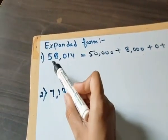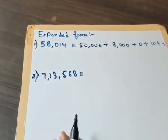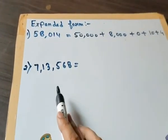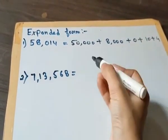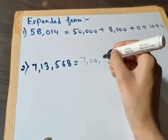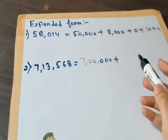That equals to 58,014. Now coming to the next question, this is 7,13,568, so first we will write 7 lakh plus.